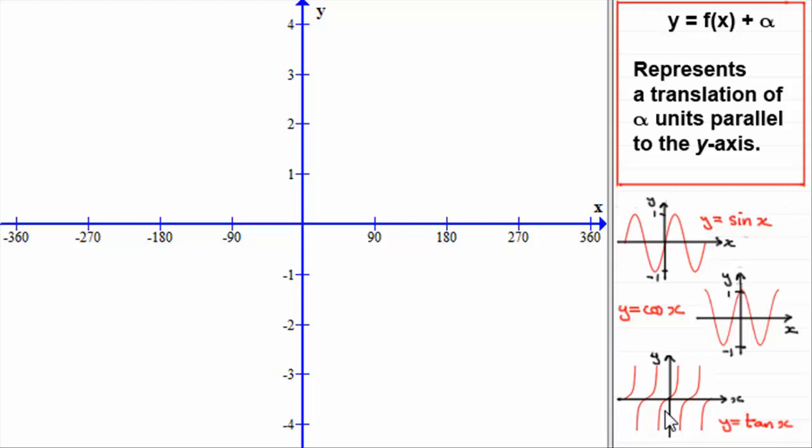What we're going to do in this tutorial is apply the transformation y equals f of x plus alpha to each one of these three graphs. Now, f of x plus alpha, alpha being a positive constant or negative constant, represents a translation of alpha units parallel to the y-axis.